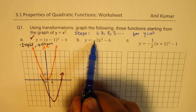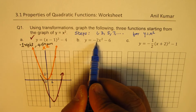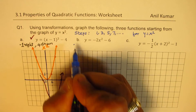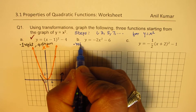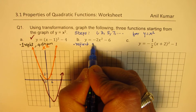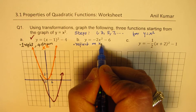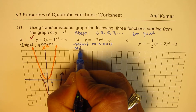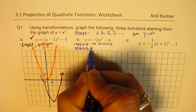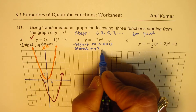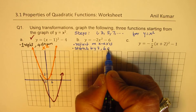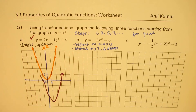For the next function, we have a reflection on the x-axis and then it is stretched by a factor of 2. So the transformations here are: reflect on x-axis, stretch by 2, and then translate 6 down.